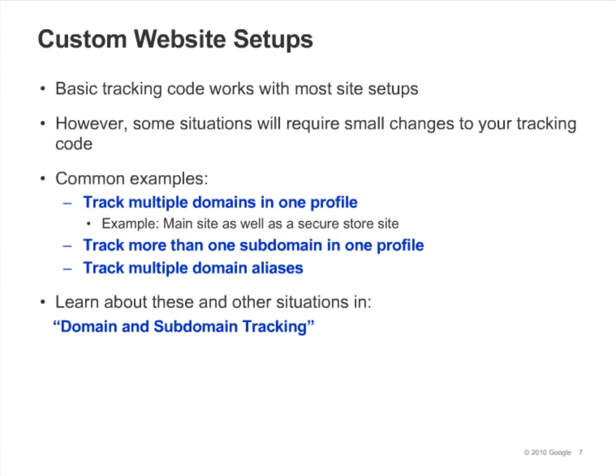The tracking code provided to you is designed to work with most site setups. In some cases, however, you'll need to make small updates to the tracking code on each of your pages. For example, if you need to track multiple domains in one profile, track more than one subdomain per profile, or track multiple domain aliases, you should review the module on tracking domains and subdomains and customize your code before adding it to your pages.